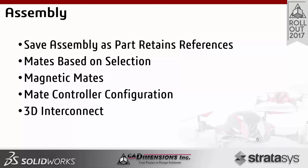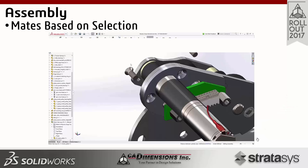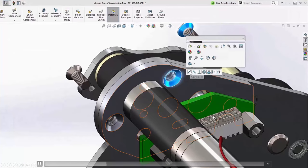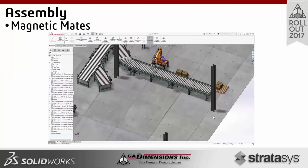Moving into assemblies — mates are now based closer on the selection, so you should see more predictable movement when mating components together. Magnetic mates have been introduced as a cool enhancement to SpeedPak. We also have mate controller enhancements, which was one of my favorite assembly additions last year, and 3D Interconnect. When adding a mate, the mates will much more predictably land where you expect — in that case the components were backwards but based on my selection they flipped themselves over and landed in the proper spot.